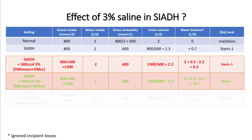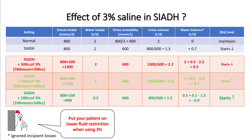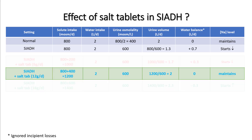If fluid restriction is not maintained — for example, leaving the patient on 2 liters — the calculations show he remains in a positive water balance and sodium continues to drop despite 3% saline. Conversely, stricter fluid restriction causes sodium to rise faster. Whenever you use 3% saline, ensure fluid restriction is very strict.